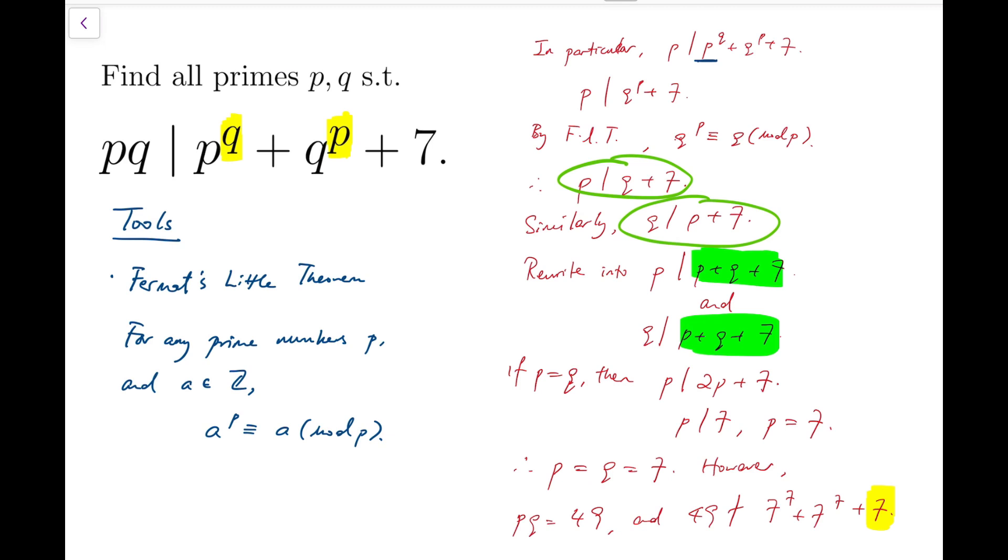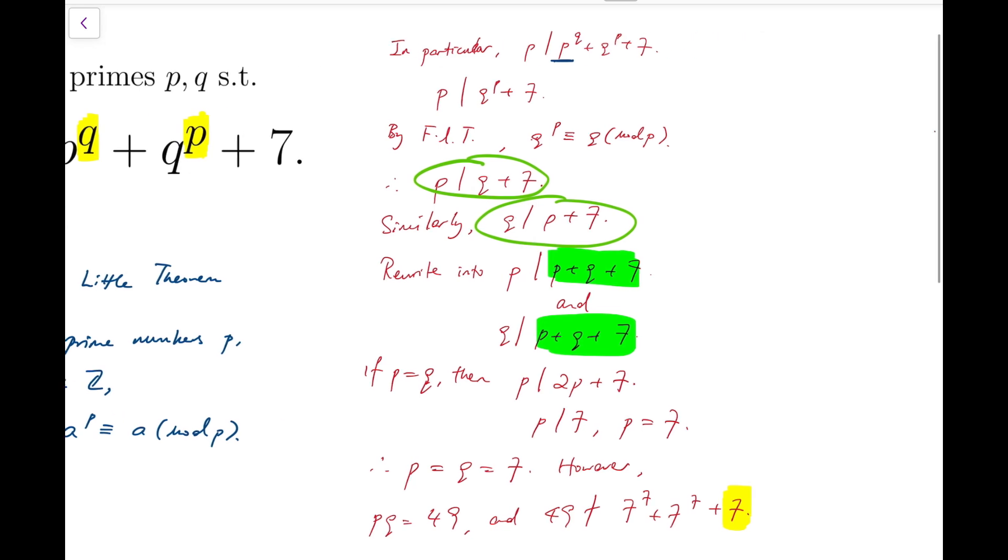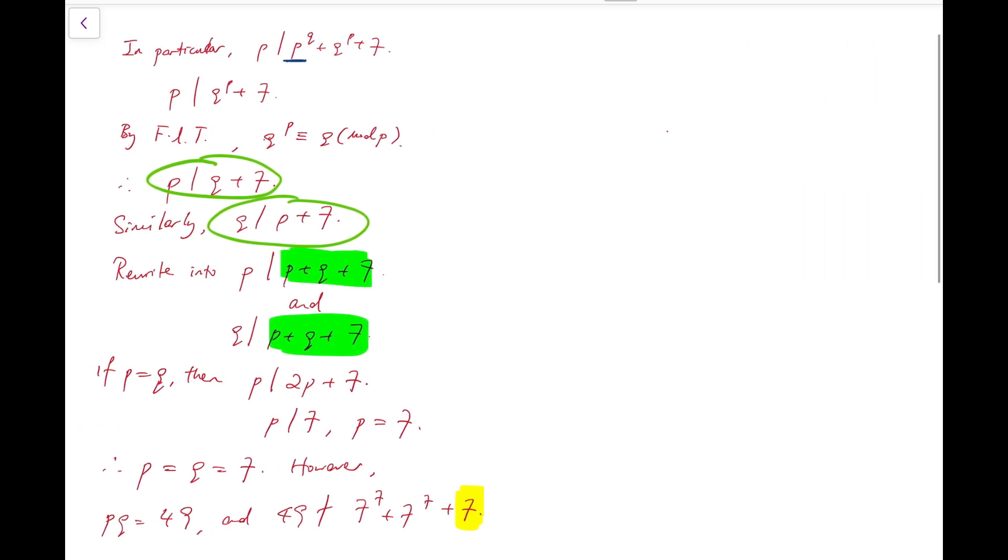We cannot have p equal to q, and so we can go back to considering the product of pq. Therefore, pq divides p plus q plus 7. I should also say that p is not equal to q, and p, q are coprime, so we have this.